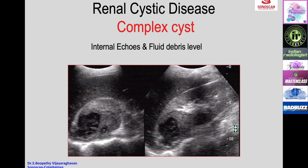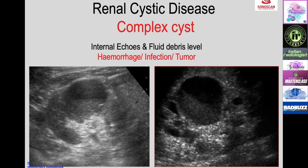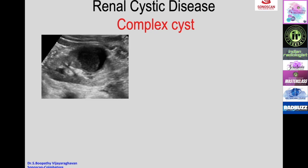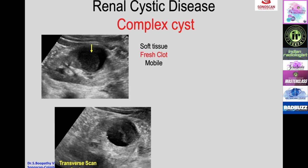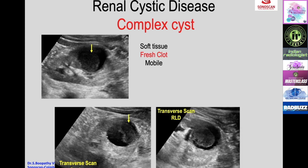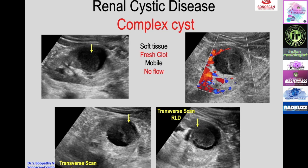A complex cyst may show internal echoes and a fluid-debris level due to hemorrhage, infection, or tumor. A cyst with a soft tissue mass within it could be a fresh clot; this can be confirmed by checking for mobility when the patient changes position—if the mass moves, it is a fresh clot. Color Doppler is also useful: there will be no flow in a clot, whereas flow may be present in a solid mass.